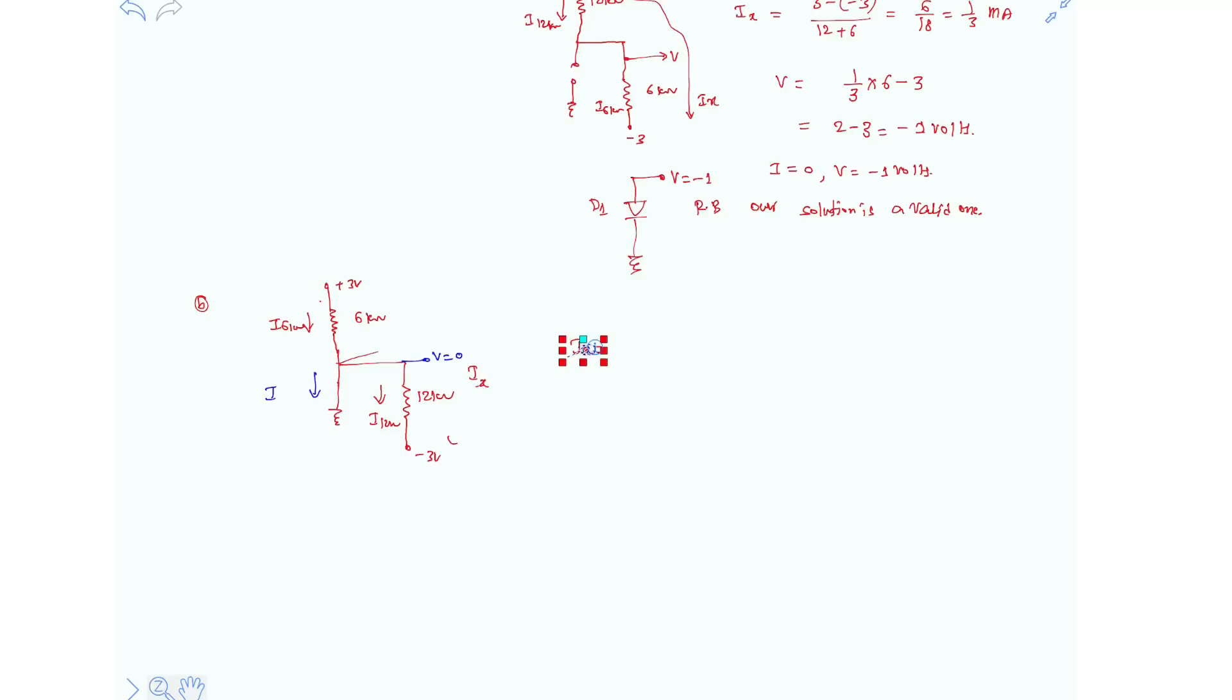So let's solve for I6kΩ. I6kΩ resistor is nothing but 3 minus 0 over 6kΩ, which is 0.5mA. And I12kΩ resistor is nothing but 0 minus of minus 3V over 12kΩ resistor, which is 0.25mA.